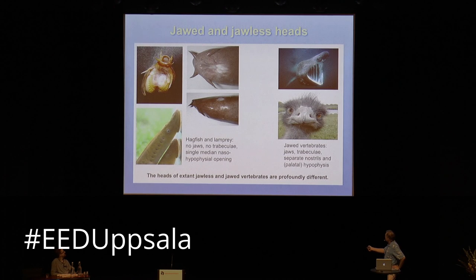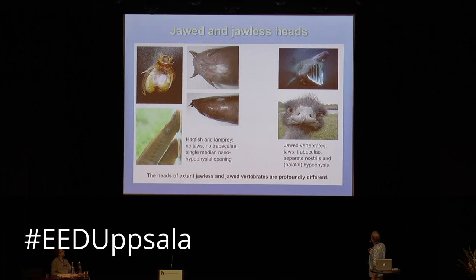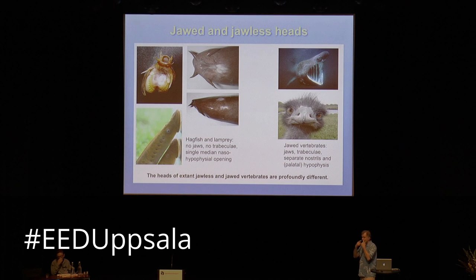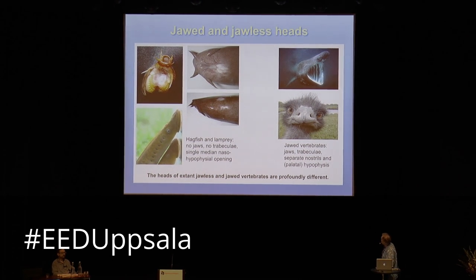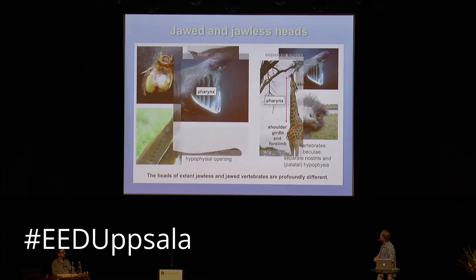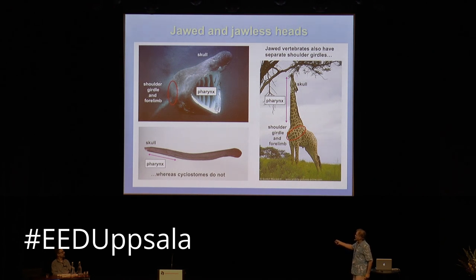If you look at the heads of jawless and jawed vertebrates, you will find they are different in all sorts of ways. Jawed vertebrates of course have jaws; we have trabeculae — a component of the floor of the braincase underneath the forebrain — we have separate nostrils, and the hypophysis opens onto the palate. Jawless vertebrates have no jaws, no trabeculae, and a single median naso-hypophysial opening, as seen in hagfish and lamprey. Additionally, jawed vertebrates have a separate shoulder girdle with a forelimb attached, whereas jawless vertebrates — cyclostomes — do not.